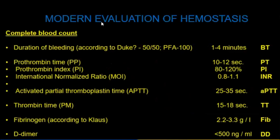Modern evaluation of hemostasis: complete blood count, duration of bleeding (minutes), prothrombin time (10-12 seconds), prothrombin index, international normalized ratio (INR), activated partial thromboplastin time (APTT), thrombin time, fibrinogen, and D-dimer.